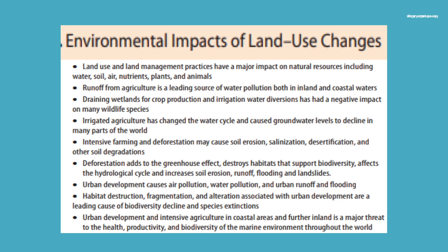Urban development causes air pollution, water pollution, and urban runoff and flooding. Habitat destruction, fragmentation, and alteration associated with urban developments are a leading cause of biodiversity decline and species extinction. Urban development and intensive agriculture in coastal areas and further inland is a major threat to the health, productivity, and biodiversity of the marine environment throughout the world.